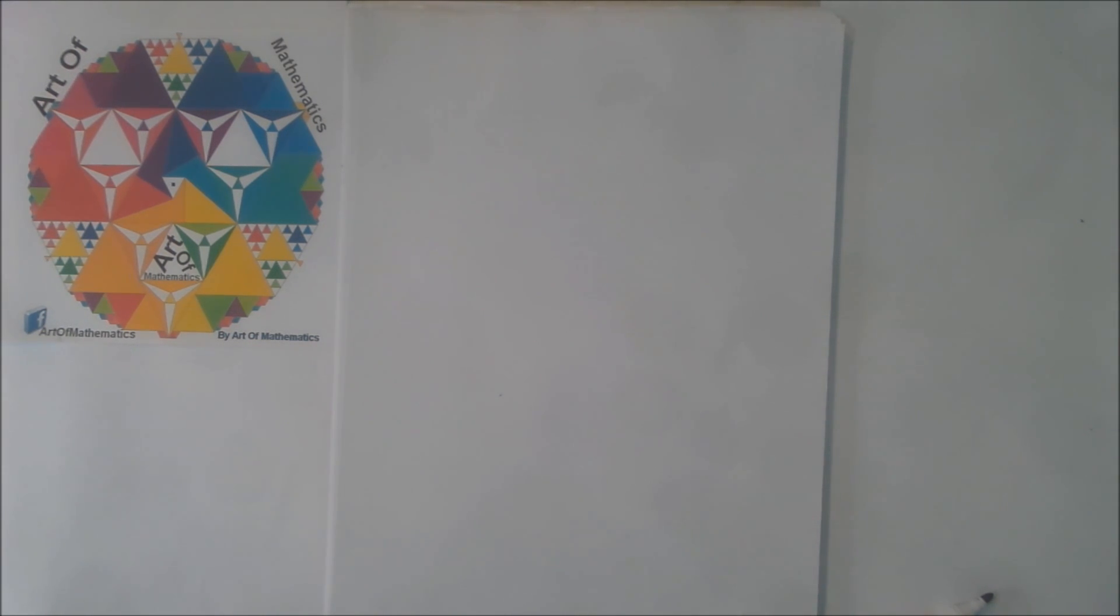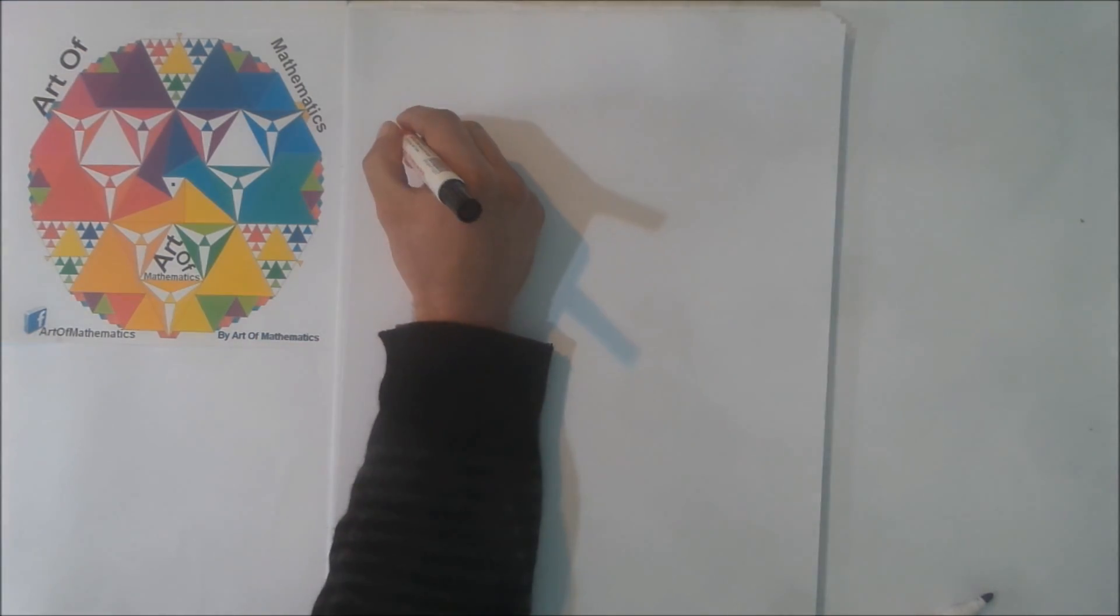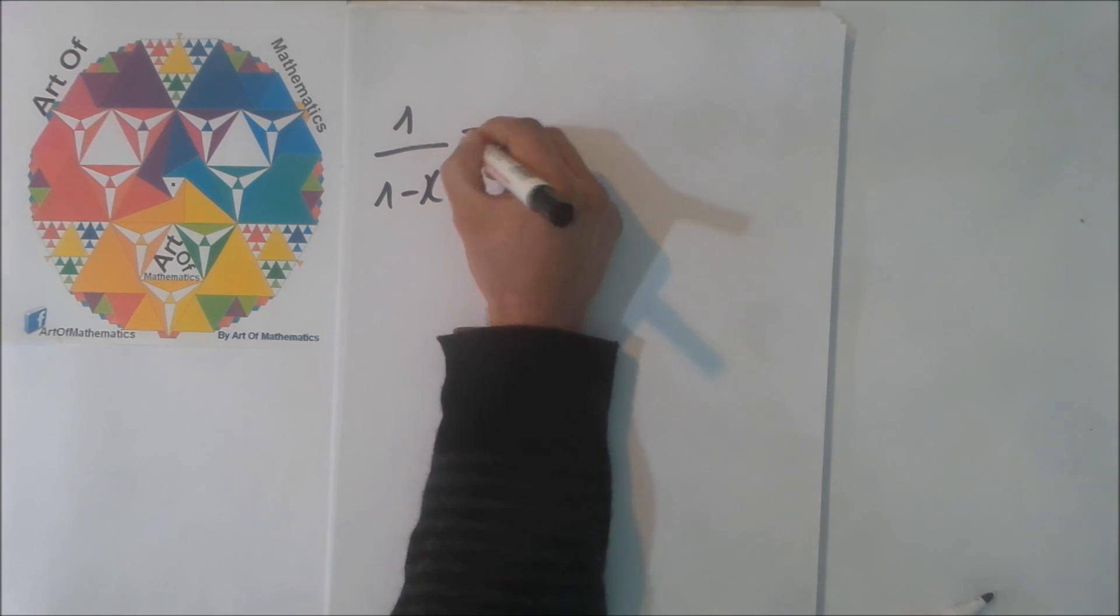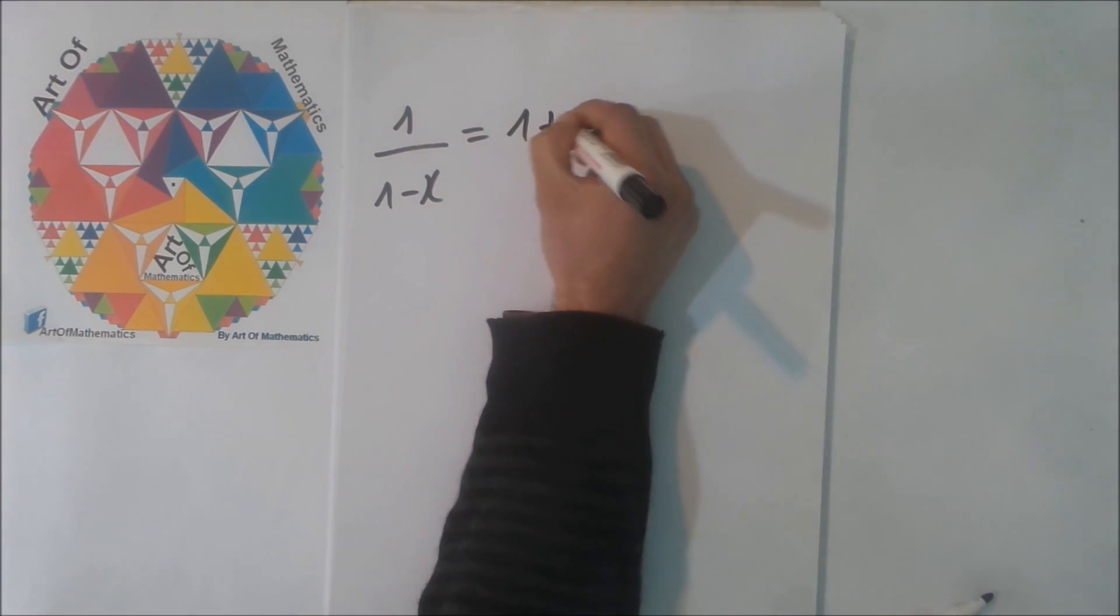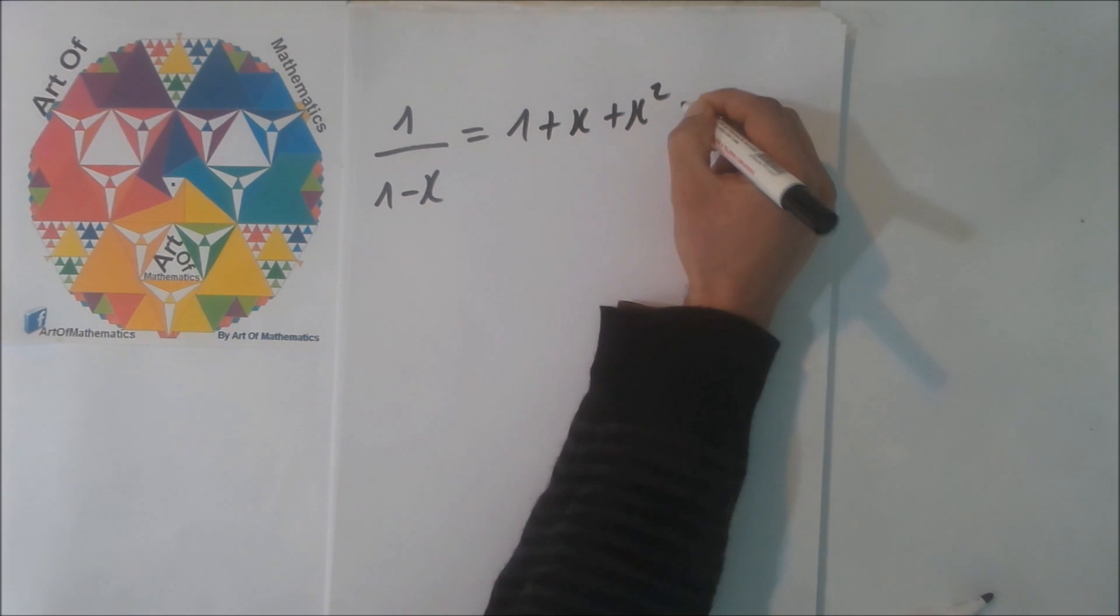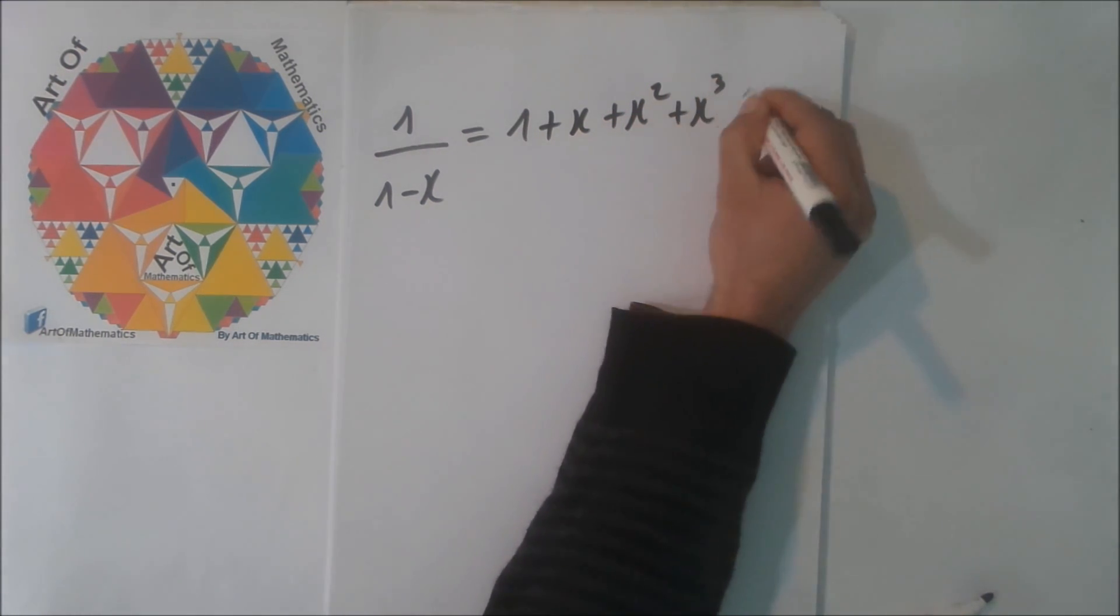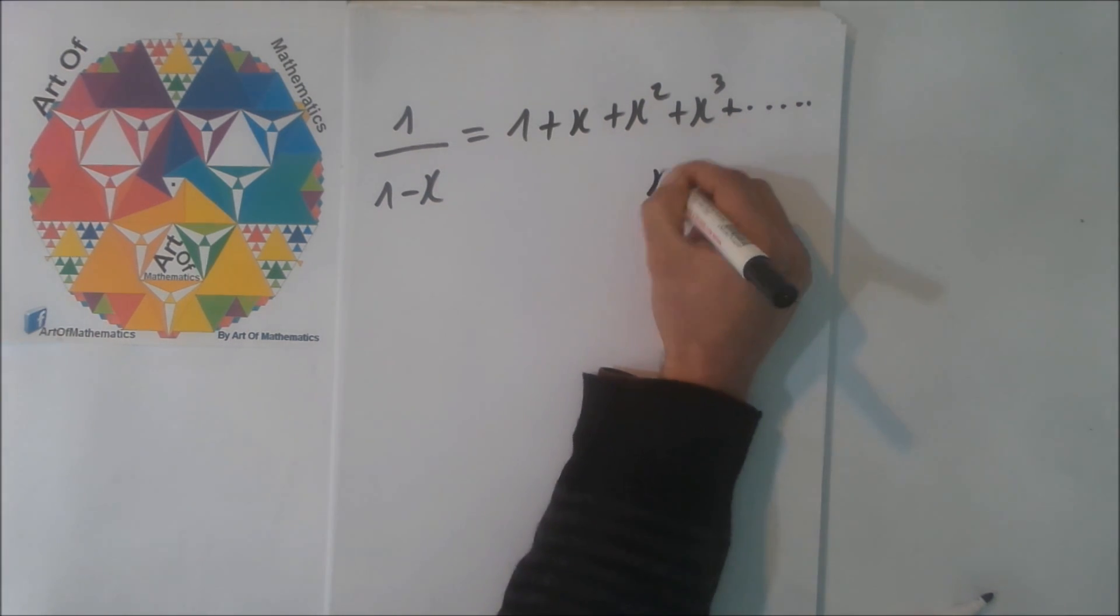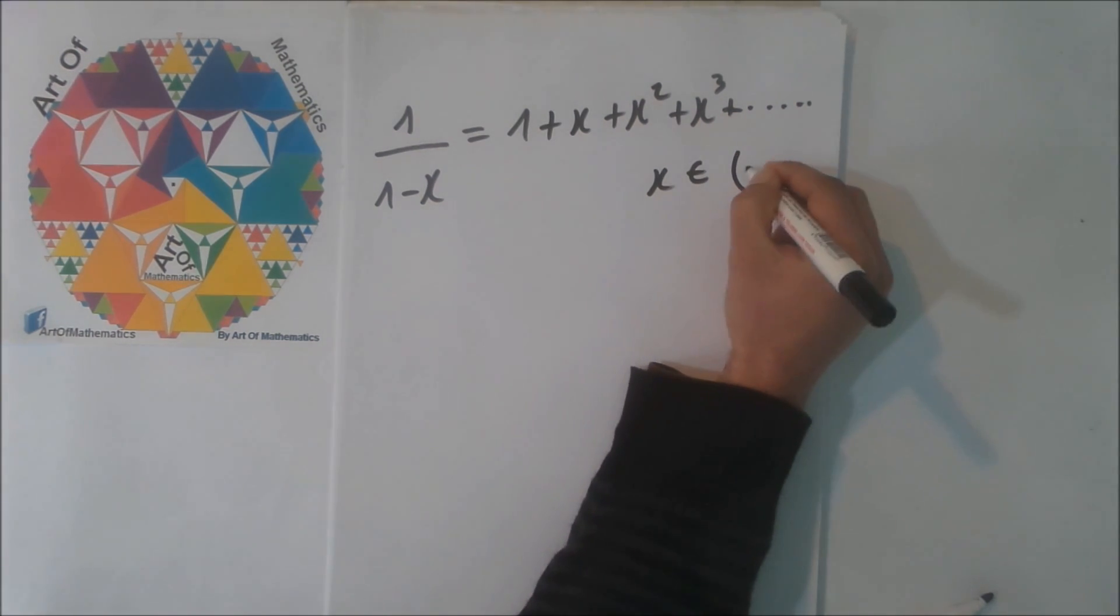So, as we have shown that the geometric series previously, this is equal to 1 plus x plus x squared and so on. And this is good when x belongs to minus 1 to 1.